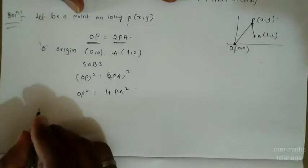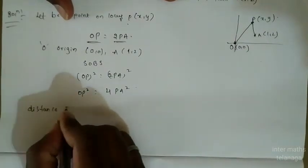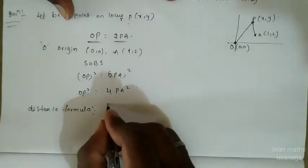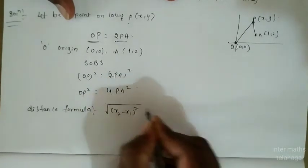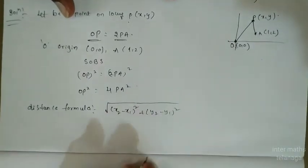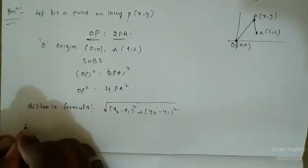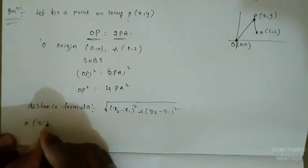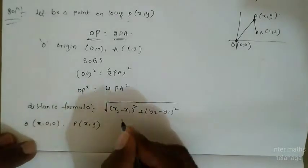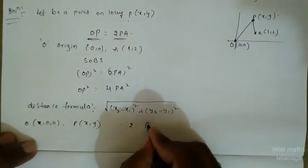The distance formula is: under root of (x₂ - x₁)² + (y₂ - y₁)². This is the distance between two points. Now substitute: for OP, origin is (0, 0) and P is (x, y).